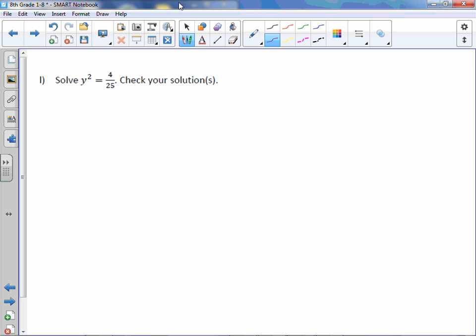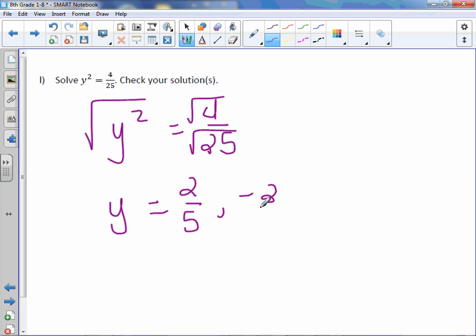This time we have a fraction. Y squared equals 4 over 25, which means I want a fractional answer. So square root, numerator and denominator. Y equals 2 fifths and negative 2 fifths.